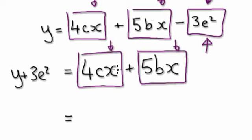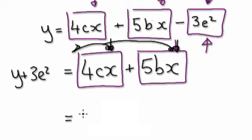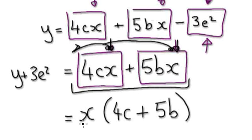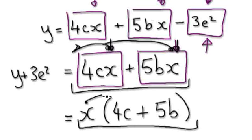That's why we've been practicing factorization. You can see x is in common with both terms. So take the x out — it would be x bracket 4c plus 5b, close it. This thing here is the same as what was there before, just written differently, because if you multiply it out you get back to the original.